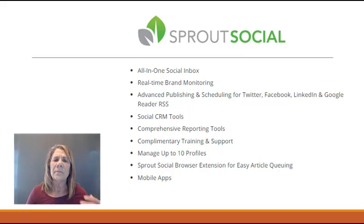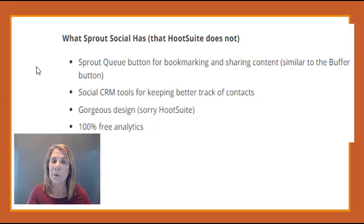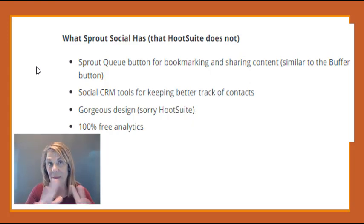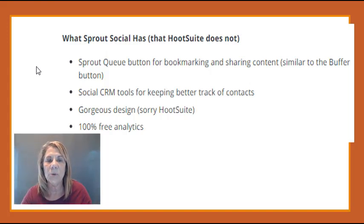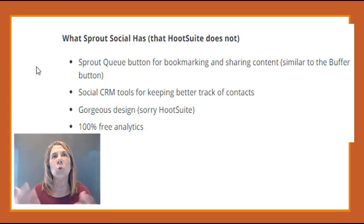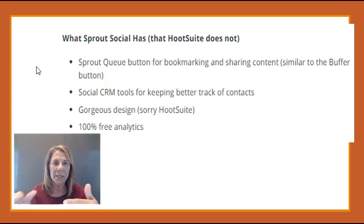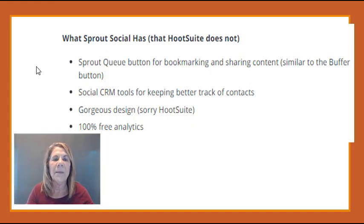So what does Sprout Social have that Hootsuite does not? Sprout has a queue button for bookmarking and sharing content, similar to Buffer, where you can keep everything in a queue to recycle and move around — I love that feature. It also has a CRM tool for keeping track of your followers. In simple terms, it's like a digital index card where you store a person's name and information to help you serve them better. It has a very nice design that Hootsuite does not.